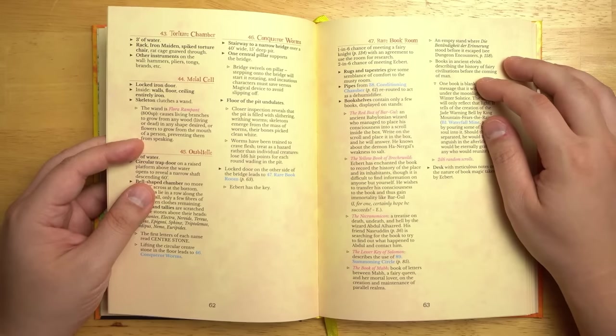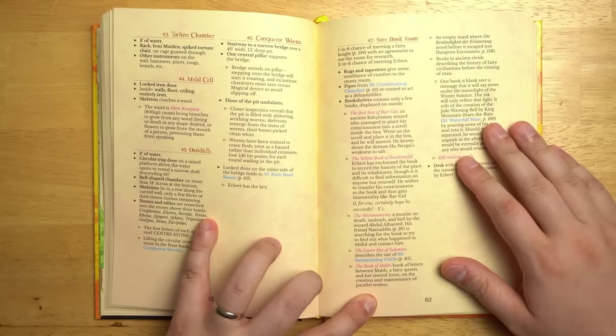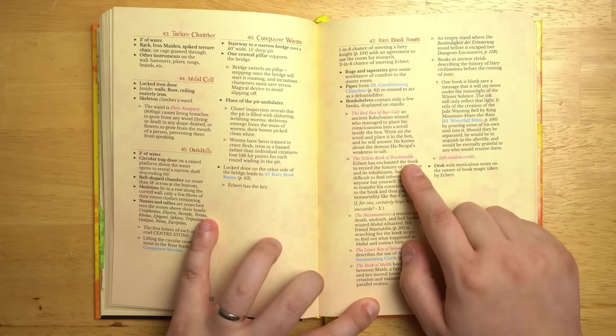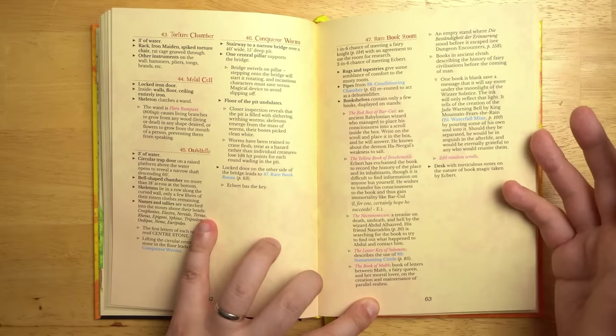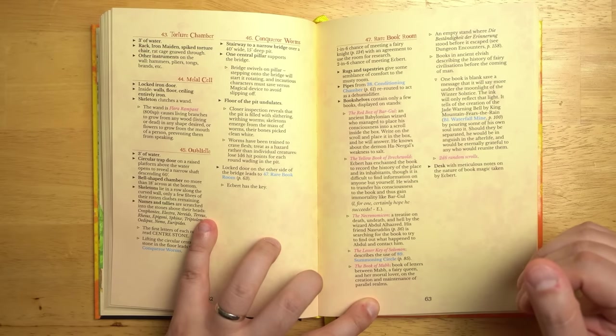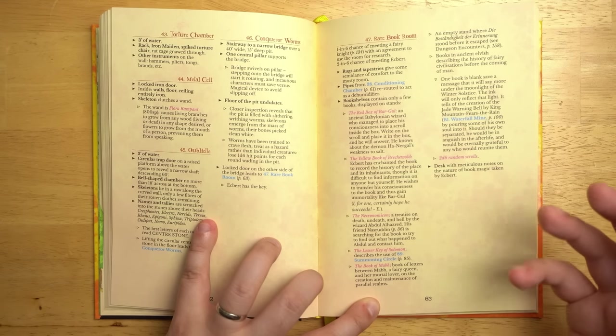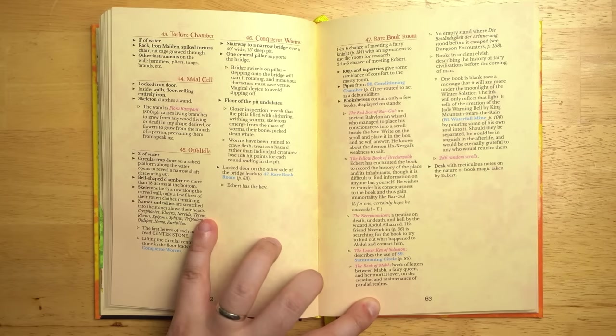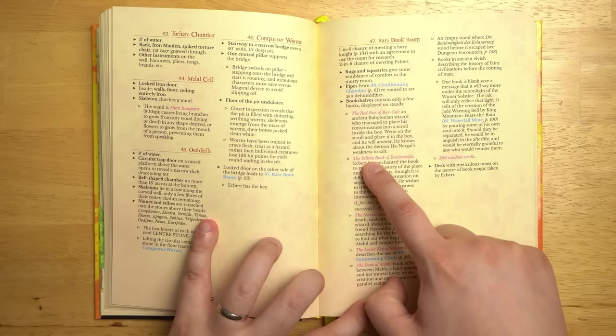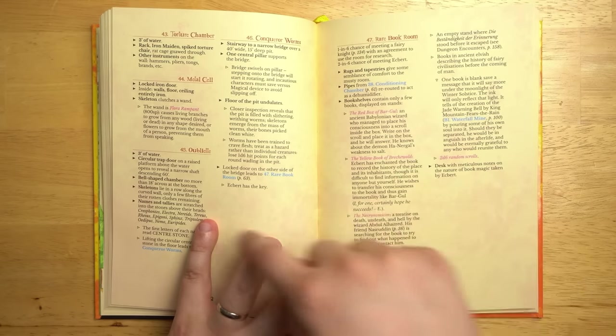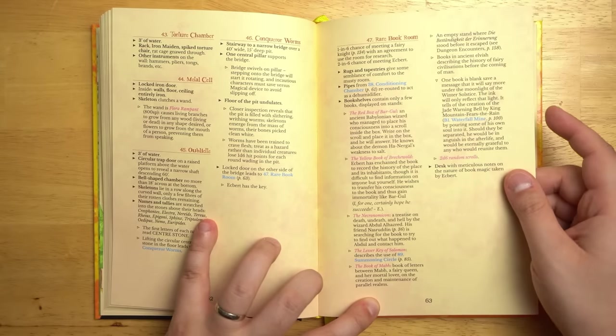If you make it all the way down to the rare book room, there's a lot of fun stuff down there. For example, you can get the Necronomicon itself. Probably a bad idea to read that. Lesser Key of Solomon, or even The Yellow Book of Breckiewold, which I assume is not this book exactly. If you gave them this book exactly, then they would simply be able to cheat their way through the rest of the game. So I assume that it's something very similar to this one. It says it's a book that records the history of the place and its inhabitants, although it's difficult to find information on anyone but yourself. And there's a little note from E here, who is probably the author of the book. And there's also notes from this guy throughout this book. So there's kind of this weird recursive thing going on where the author of the book is talking to you as you read it.